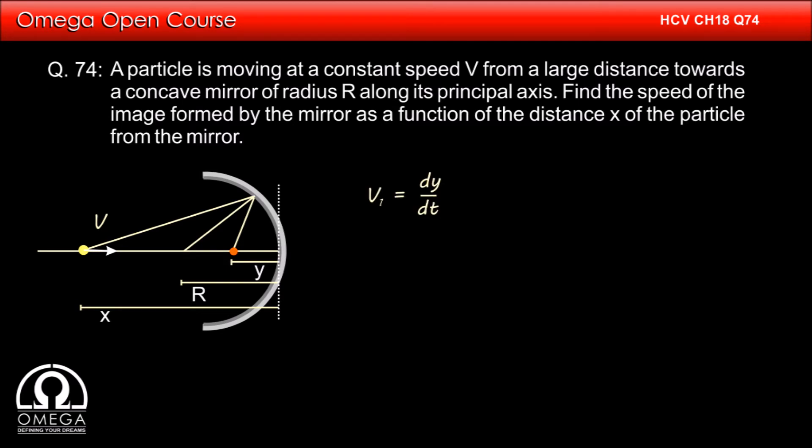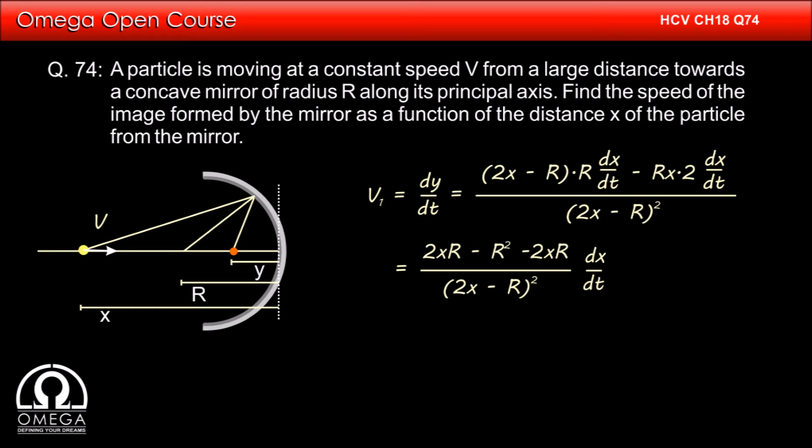Differentiating, we get dy by dt is equal to 2x minus r into r dx by dt minus rx into 2 dx by dt divided by 2x minus r whole square. Simplifying, we get 2xr minus r square minus 2xr divided by 2x minus r whole square into dx by dt.